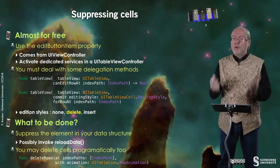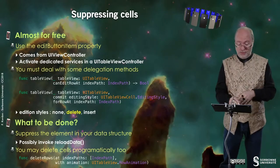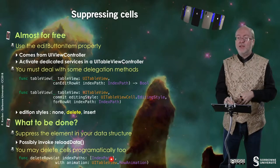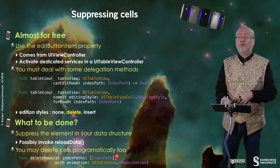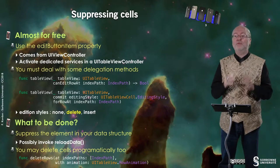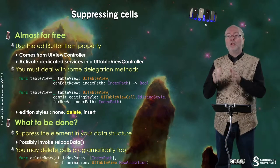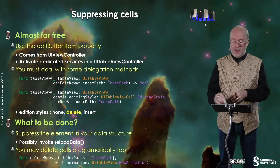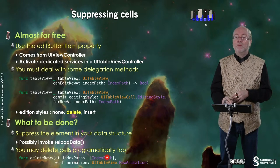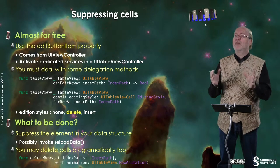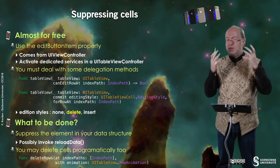You can also delete cells programmatically. When you decide to update your data structure and want this update to be propagated on the UITableView, you just invoke this method where you request these rows to be deleted. You can delete an array of index paths, so several cells simultaneously.